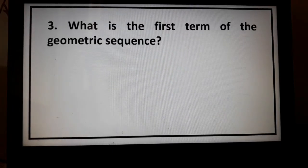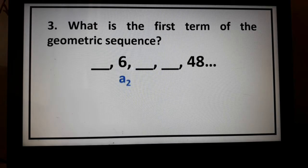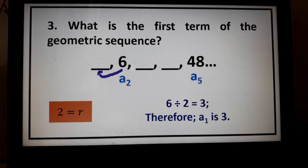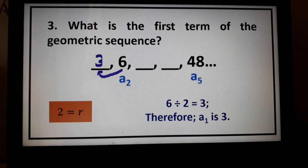In the same problem, knowing that our common ratio is equal to 2, all we need to do is divide 6 by our common ratio. So, 6 divided by 2 is equal to 3. Therefore, our first term is 3.